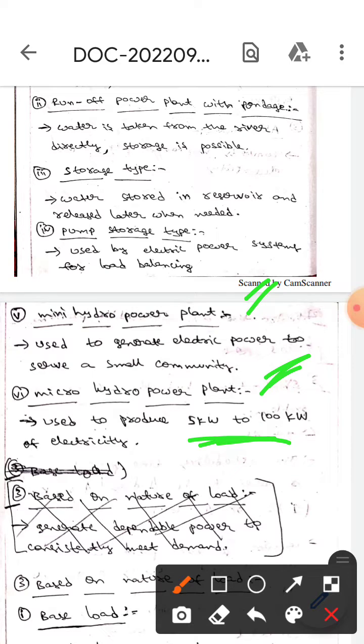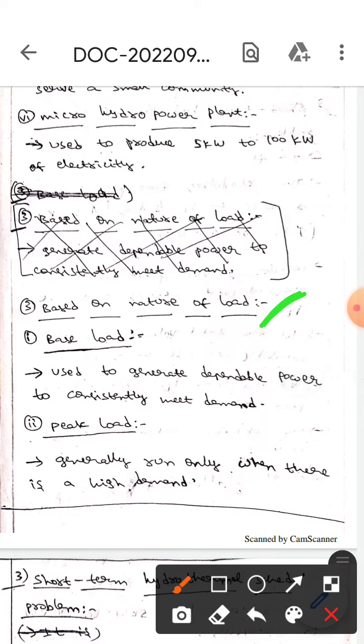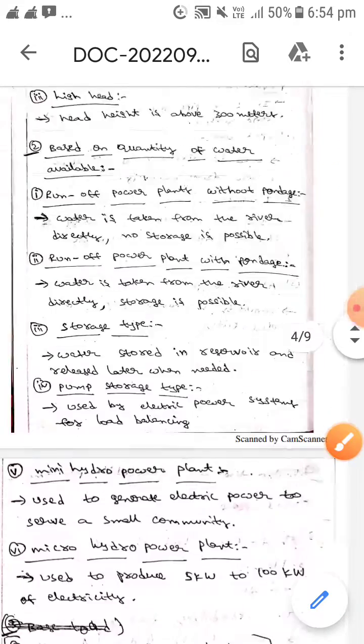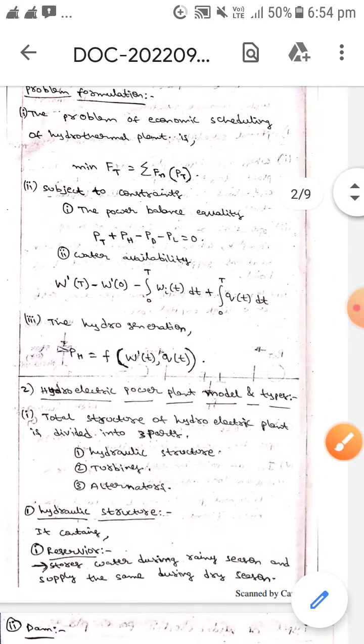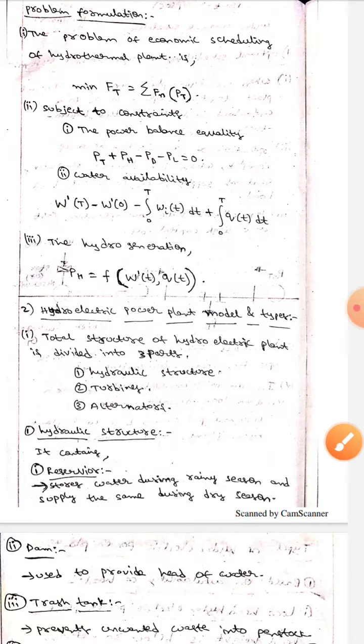The third classification is based on nature of load. Base load plants are used to generate dependable power to consistently meet demand. Peak load plants generally run only when there is high demand. This is all about hydroelectric power plant models and their types. I hope you understand. Thank you.